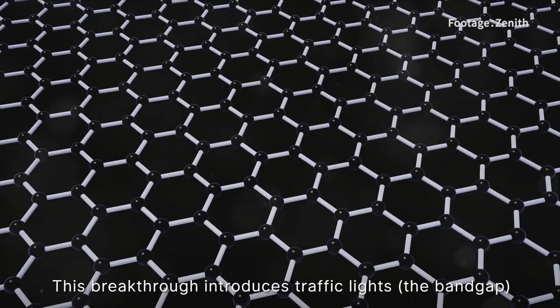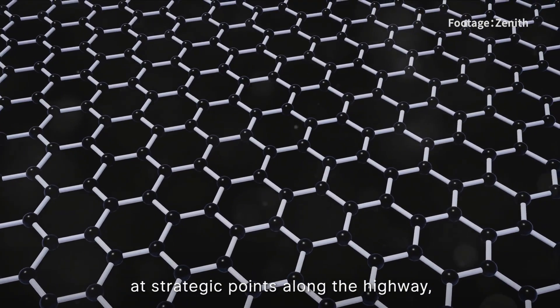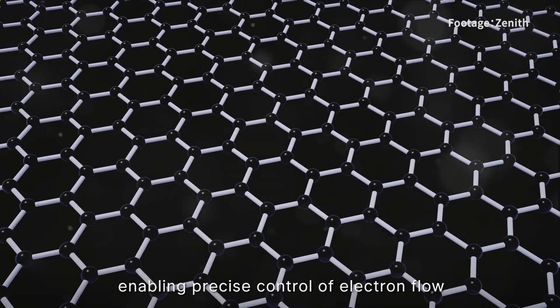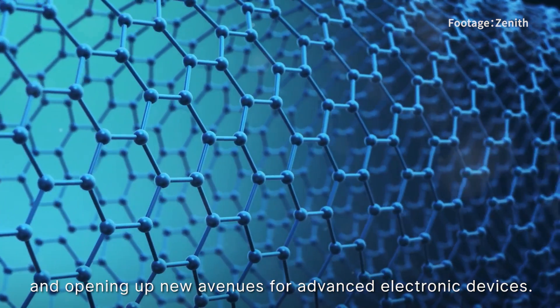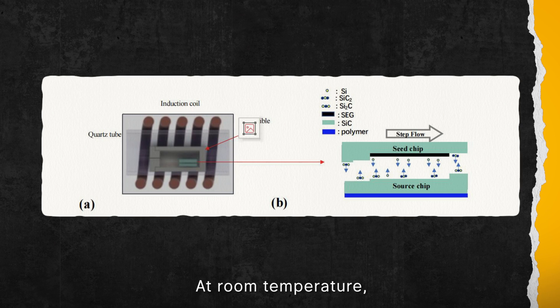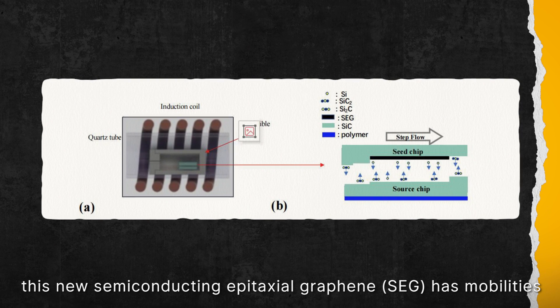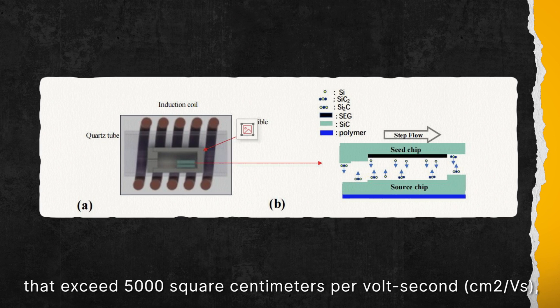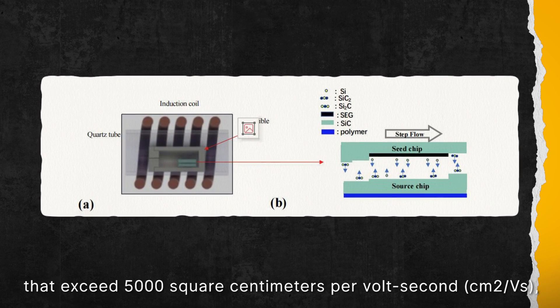This breakthrough introduced traffic lights at strategic points along the highway, enabling precise control of electron flow and opening up new avenues for advanced electronic devices. At room temperature, this new semi-conducting epitaxial graphene, SEG, has mobilities that exceed 5000 square centimeters per volt second.